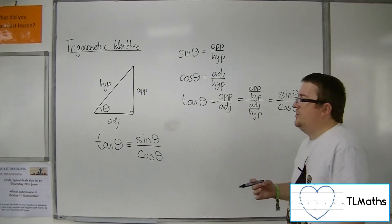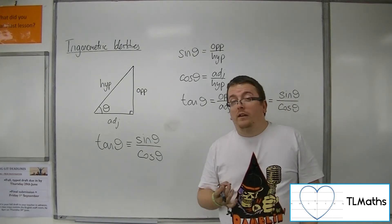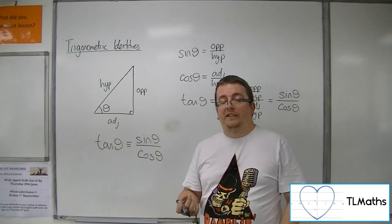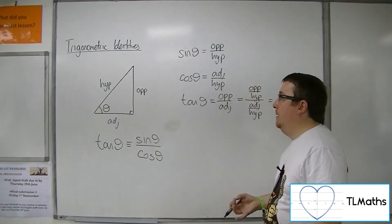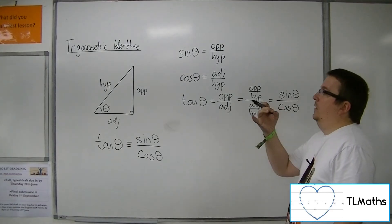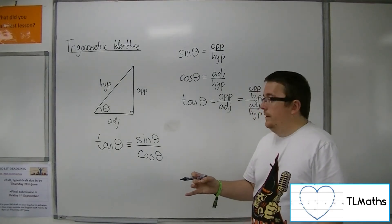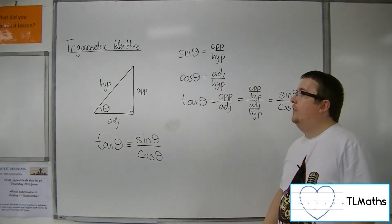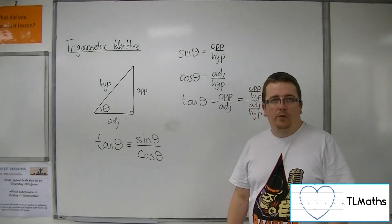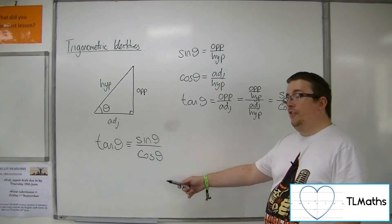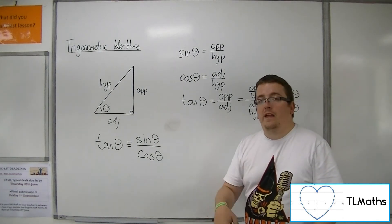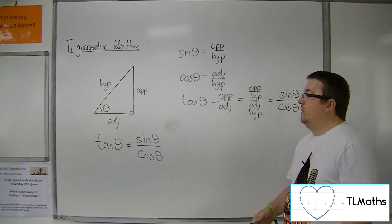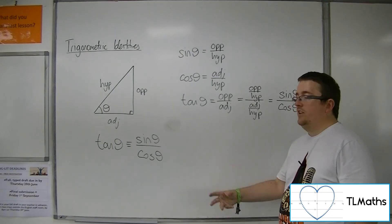Now, obviously to be well defined, there is a problem when cosine theta is zero. But aside from that, we have this trig identity that we can utilize moving forward. It's just that cosine theta, when it is zero, that's where you get your vertical asymptotes for the tan curve. But this is a trigonometric identity that we need to learn.